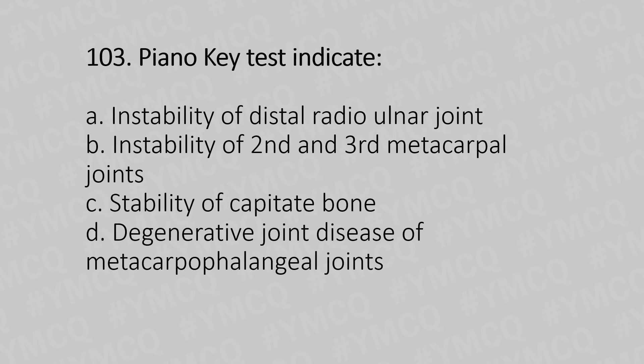Question number 103: Piano key test indicates. Option A, instability of the distal radial ulnar joint. Option B, instability of second and third metacarpal joints. Option C, stability of carpal bone. Option D, degenerative joint disease of metacarpophalangeal joints. And the answer is Option A, instability of distal radial ulnar joint.